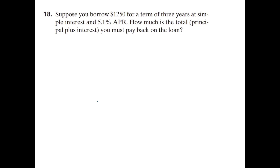Suppose you borrow $1,250 for a term of three years at simple interest and 5.1% APR. When you read 'simple interest,' you know to use the formula I = P × R × T. So P = $1,250, and R = 5.1% which we write as 0.051 because we do calculations with decimals, not the percent symbol.